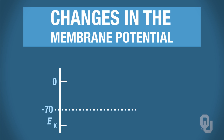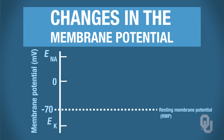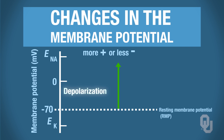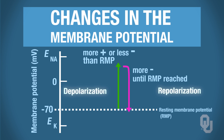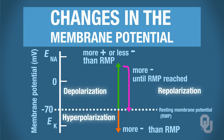On this graph, you have the membrane potential on the y-axis. Depolarization means your membrane potential has become more positive, or less negative, than the resting membrane potential. The resting membrane potential of a neuron is negative 70 millivolts. Repolarization means the membrane has become more negative until it reaches negative 70 millivolts — repolarization is over once the membrane reaches rest. Hyperpolarization tells us that the membrane potential is more negative than the resting membrane potential.